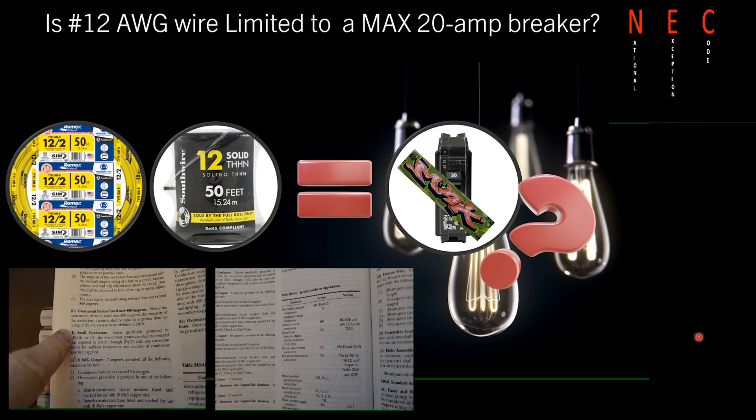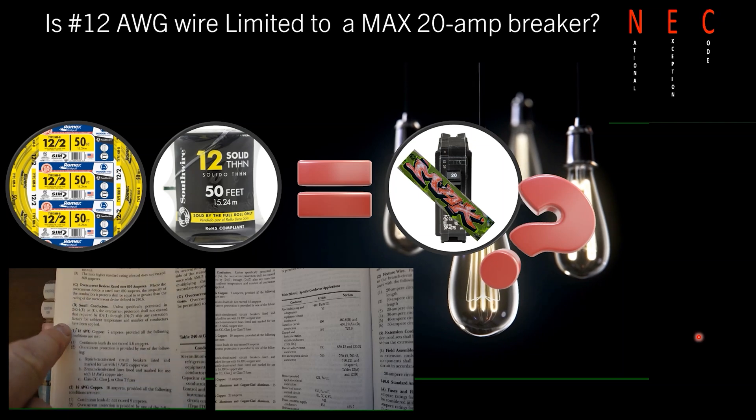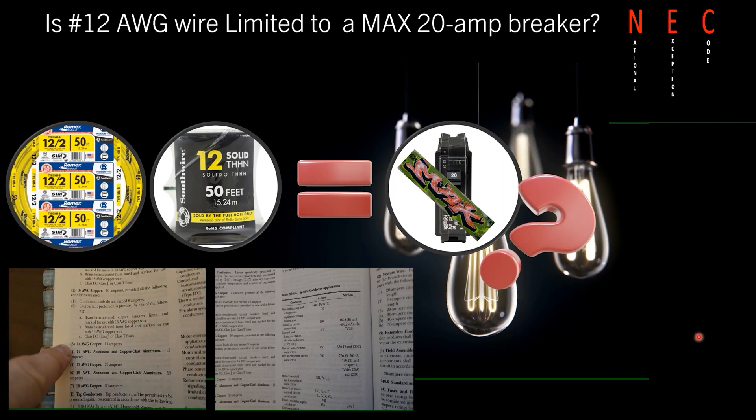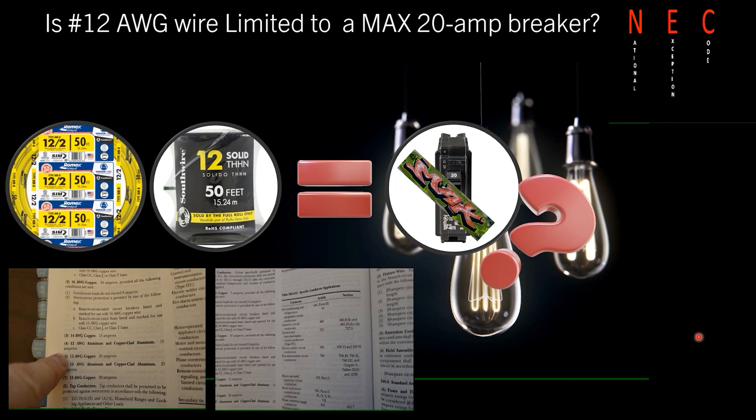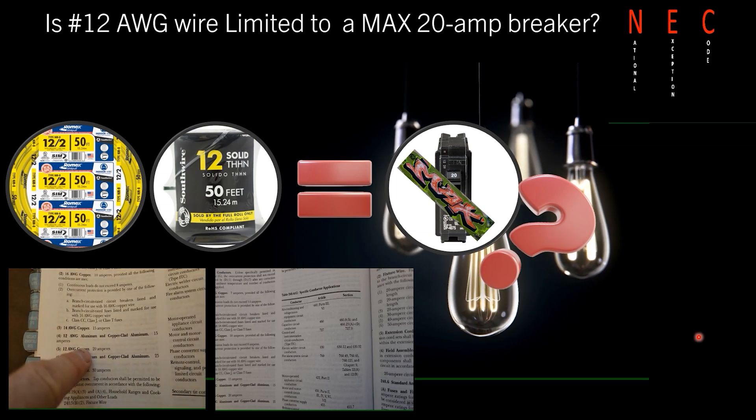But if it's not listed in part E, which is tap conductors, or in part G, you are not allowed to exceed 14 gauge wire on a 15 amp breaker, 12 gauge wire on a 20 amp breaker, and 10 gauge wire on a 30 amp breaker.